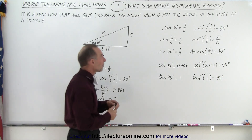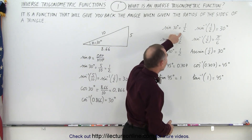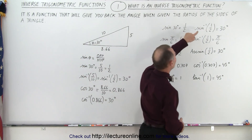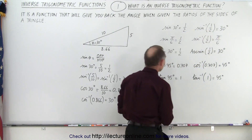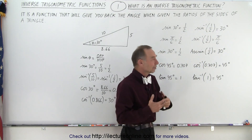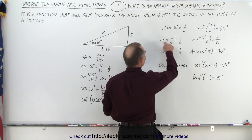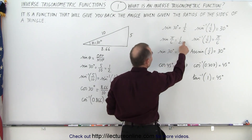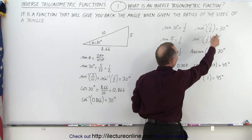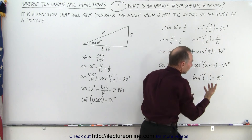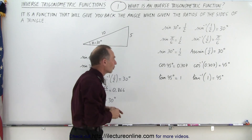Here are some examples: if the sine of 30 degrees is 1 half, then the inverse sine of 1 half is 30 degrees. It doesn't matter if it's done in degrees or radians — we can say the sine of π/6 is equal to 1 half, therefore the inverse sine of 1 half is π/6. Pi over 6 in radians is of course the same as 30 degrees.